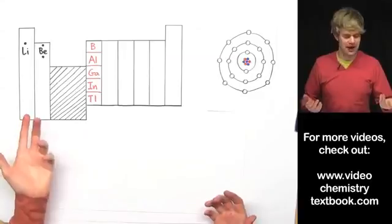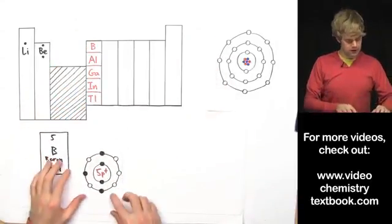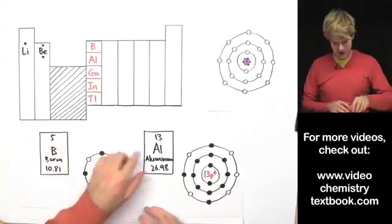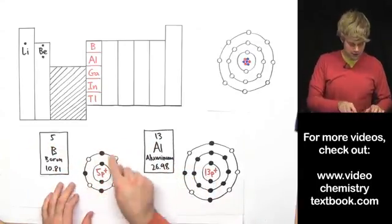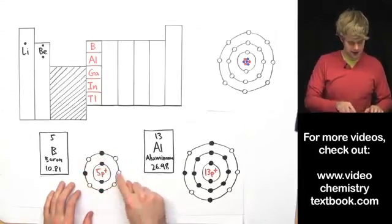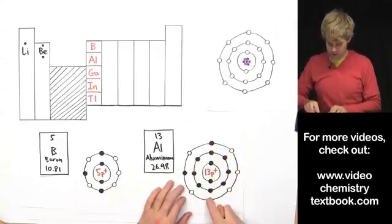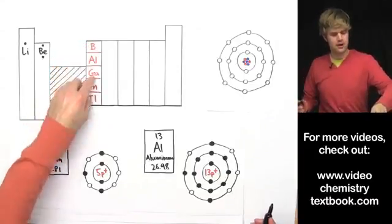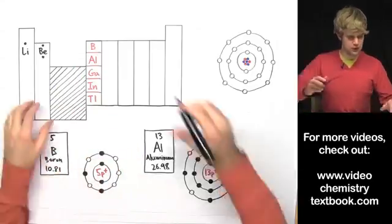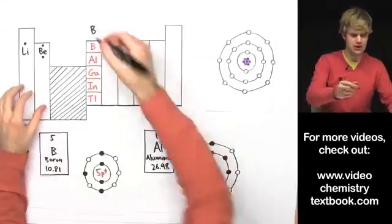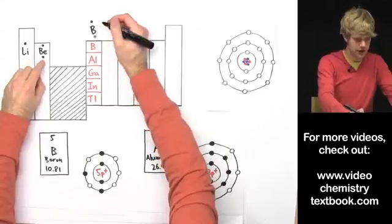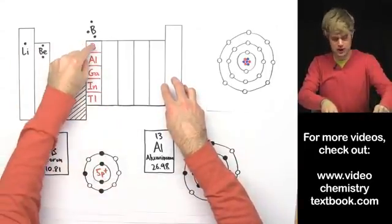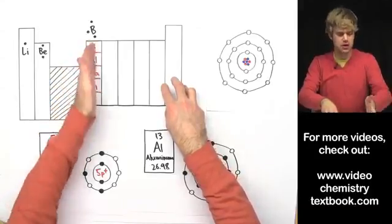Moving on to boron — five protons — and aluminum — thirteen protons. Looking at the valence shell structure, boron has three valence electrons and aluminum also has three valence electrons in its outer shell. So everything in this third column has three valence electrons. For boron's electron dot diagram, we put a dot on the top, a dot on the bottom, and a dot to the left to show three valence electrons.